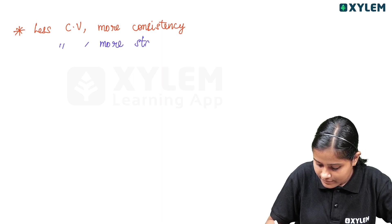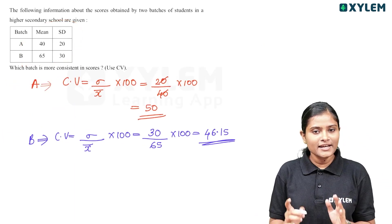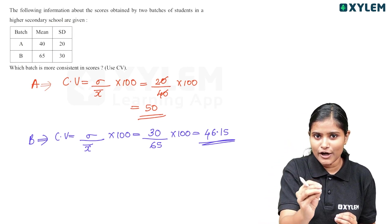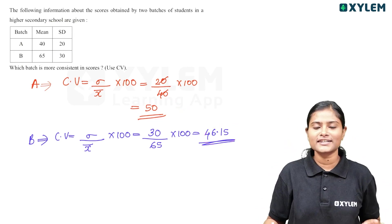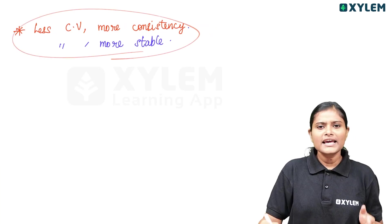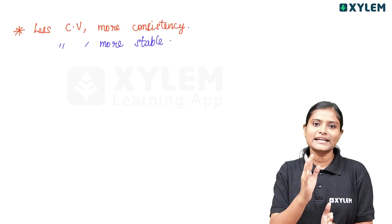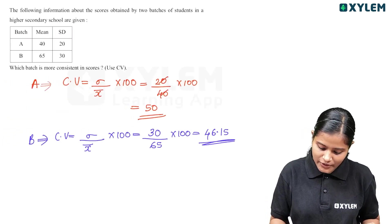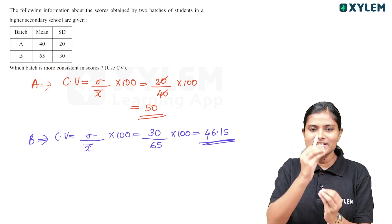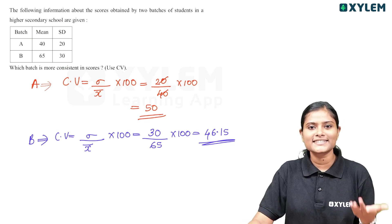So we have seen this question. We have to calculate the value and assume which batch is consistent. This is a type of question that may appear with 3 or 4 parts in a test, and it is straightforward to solve. Let's move on to the next one.